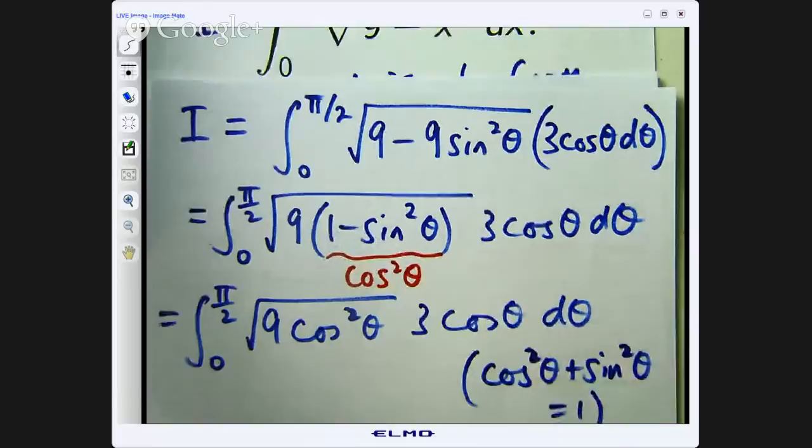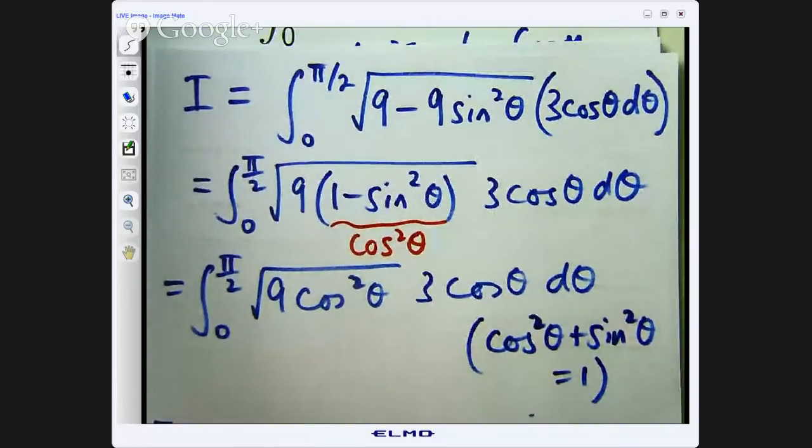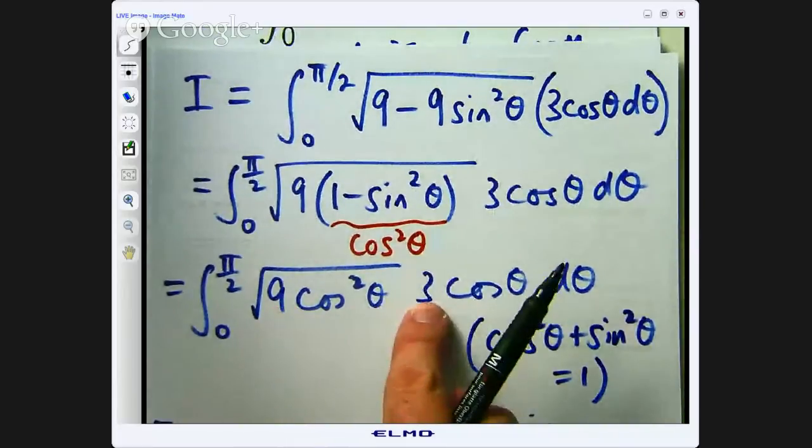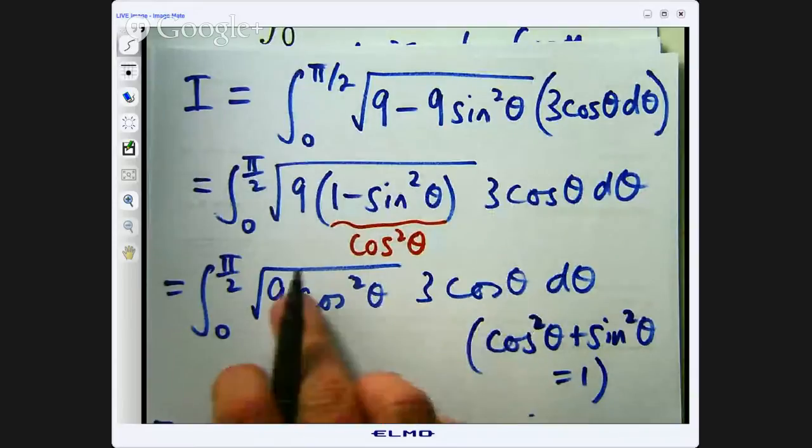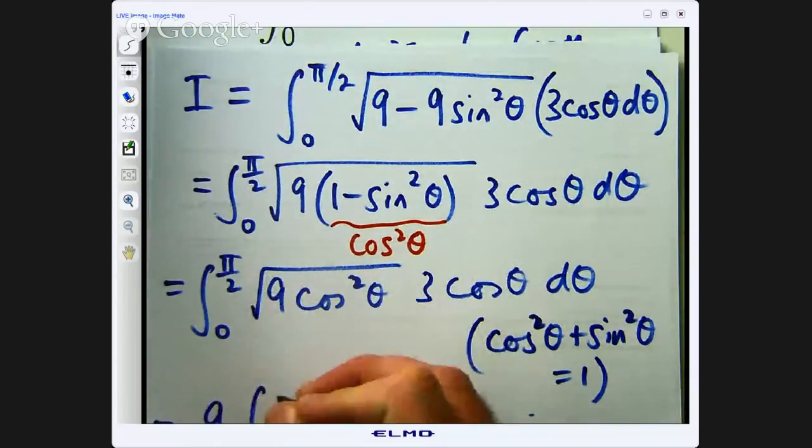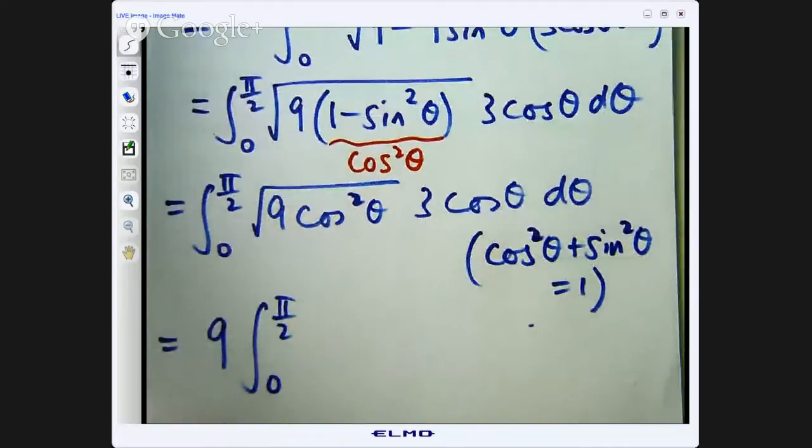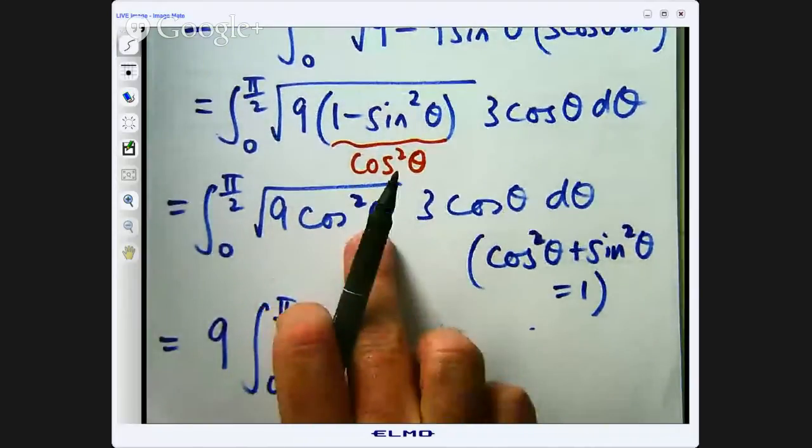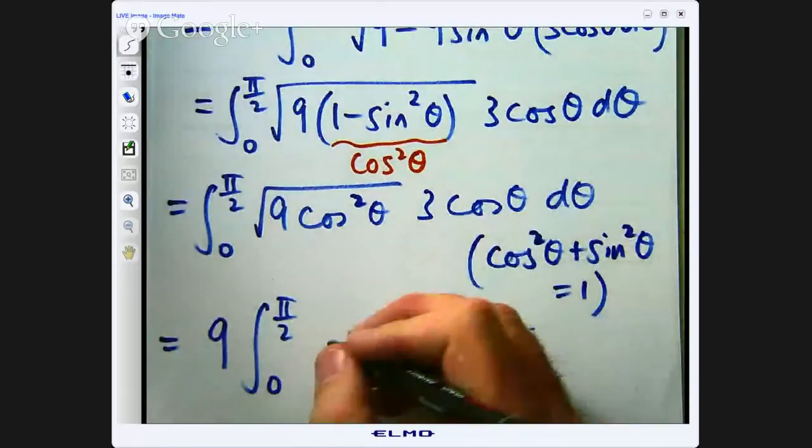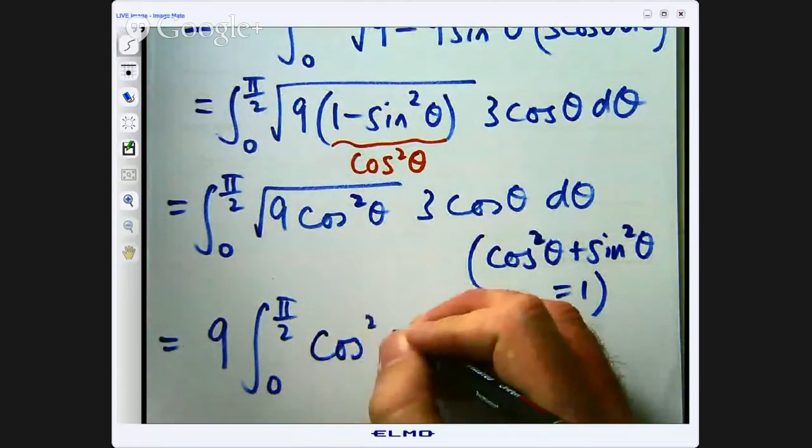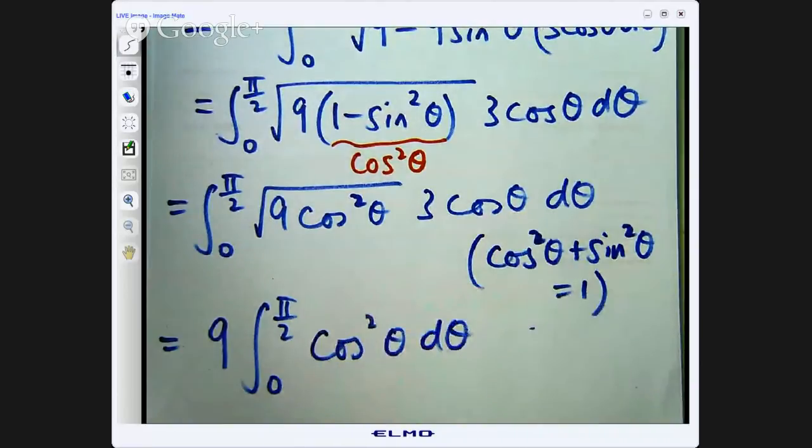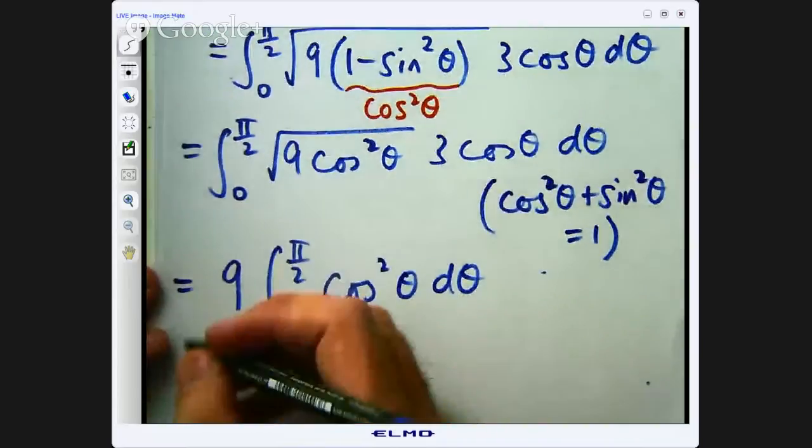I have used cos squared theta plus sine squared theta equals 1 from this step to this step and now that is going to become 3 I have got 3 over there so I am going to get 3 times 3 which is 9 and I am going to get a cosine out of there and a cosine out of there cos squared theta d theta and now we have to think about how we are going to integrate this well I am going to use the double angle formula.